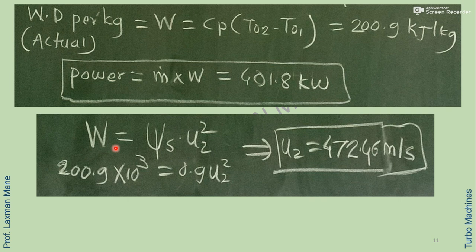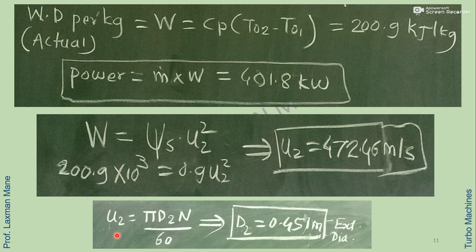Work done is also equal to slip factor into U2 square. To find U2, we convert the work done from kJ per kg to J per kg by multiplying by 1000, then solve for U2 in m/s. Using the formula U2 equals pi D2 N divided by 60, we find the exit impeller diameter D2.